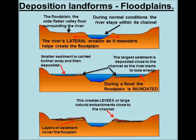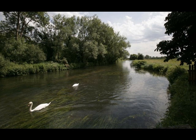There are seven factors that can affect river discharge. These are: amount of precipitation, type of precipitation, previous weather conditions, temperature, land use, relief, and rock type.